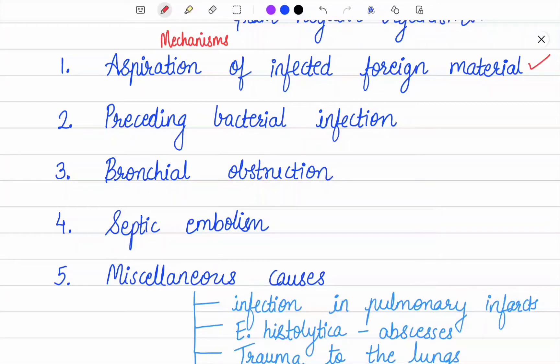Second mechanism is preceding bacterial infection. Preceding bronchopneumonia in a debilitated patient may develop into lung abscess. Other infective conditions like tuberculosis, bronchiectasis, and mycotic infections may occasionally result in lung abscess formation.